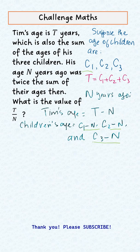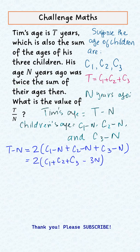So now we form the final equation that T minus N is equal to twice the sum of the ages of the children then, whatever the age of the children was during that time or N years ago.